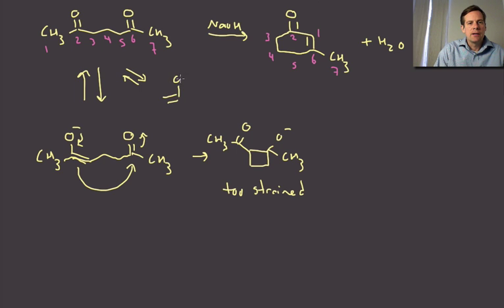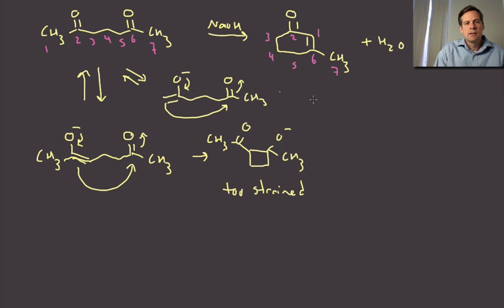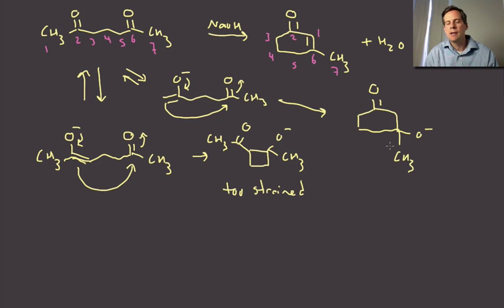We can go to the alternative enolate here. Right. And now we have one, two, three, four, five, six, it's going to be the same type of process, but the intermediate, the geometry that we have to achieve to make this happen is just much, much more favorable because we're forming a nice stable six membered ring instead of a four membered ring. Okay. So we get to that intermediate and then you go ahead and do the condensation part of the mechanism.